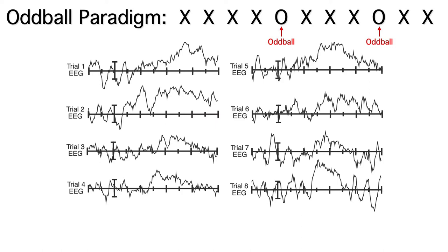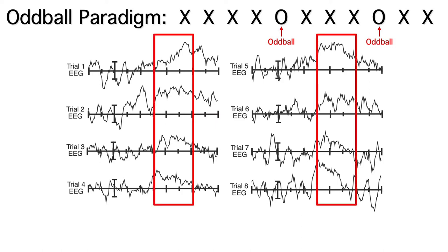You can see a lot of variation from trial to trial, but all 8 trials have a positive voltage from approximately 300 to 600 milliseconds. That's the P3 wave, which is a very large positive component that you get for oddballs in this paradigm.